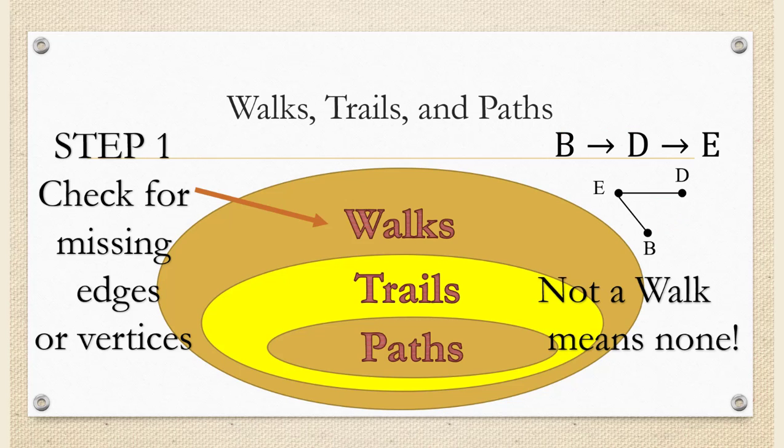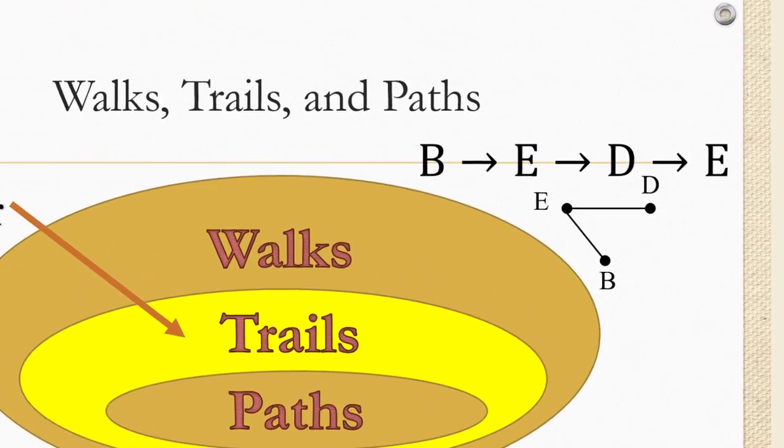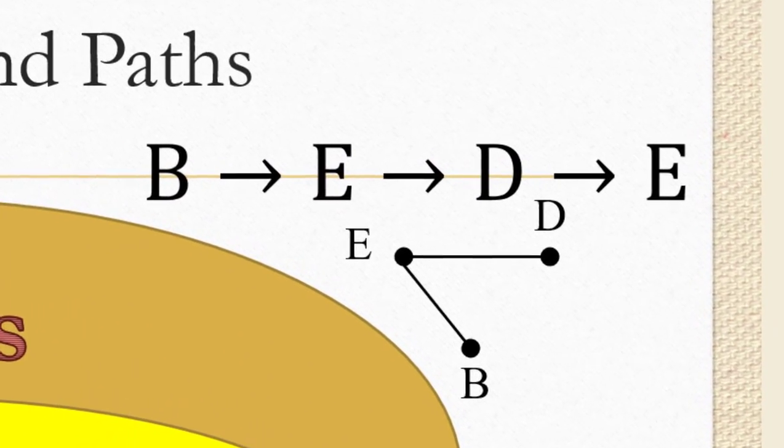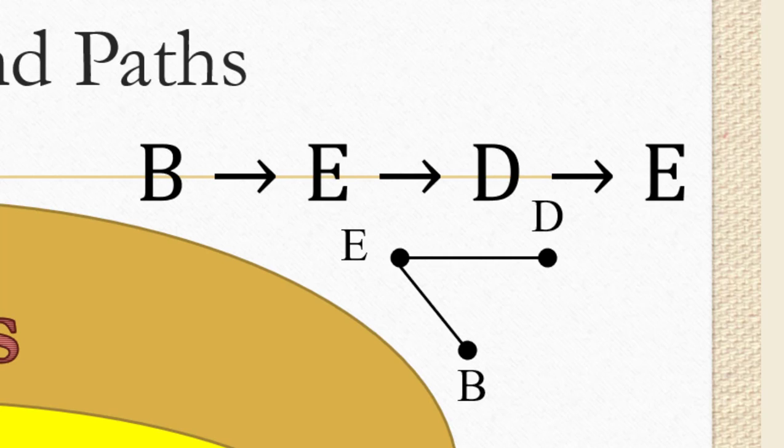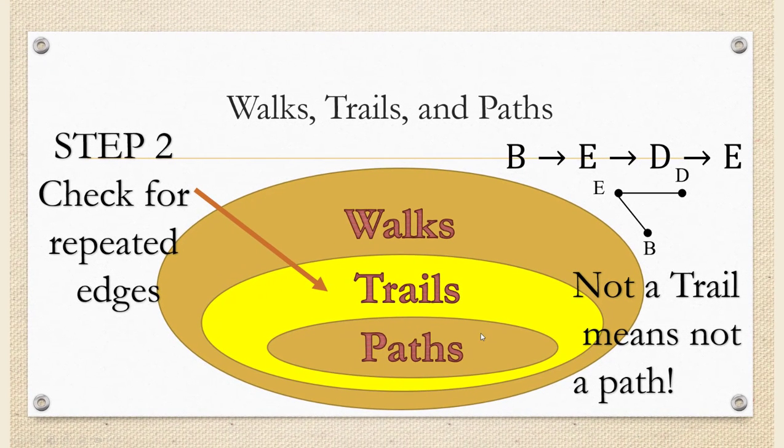Now suppose that you have a sequence and you know that it's a walk. Then the next thing you want to check for is to see if it's also a trail. Now if it has any repeated edges, then it's not. So you look for those repeated edges. So here, for example, from B to E to D and back to E again, that is a walk, but it happens to have a repeated edge. From D to E and E to D, that's the same thing. We are covering that edge twice and that's not allowed. So this is not a trail, which means it's also not a path. So in this case, we would know that it's a walk, but not a trail or a path, and we'd be done.